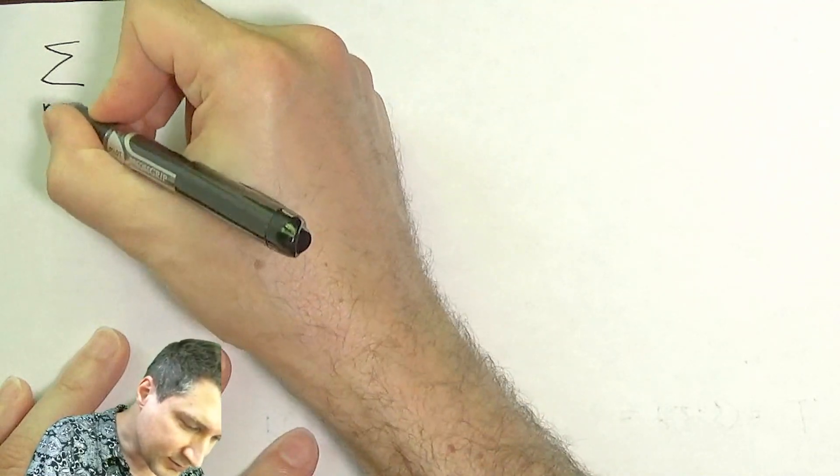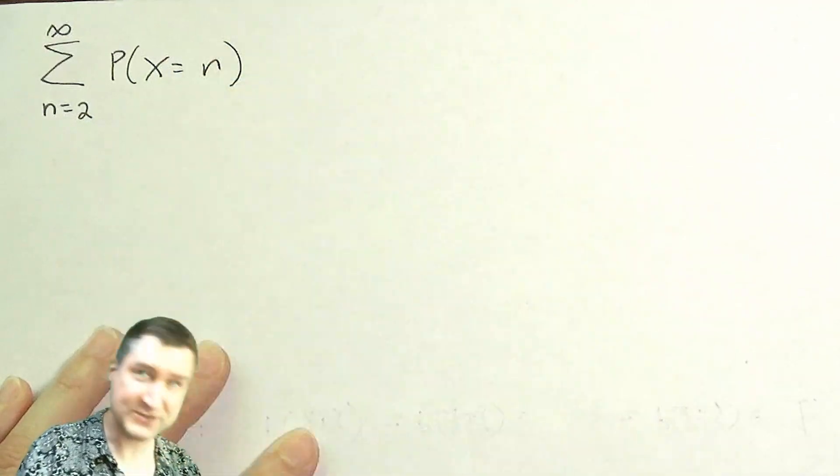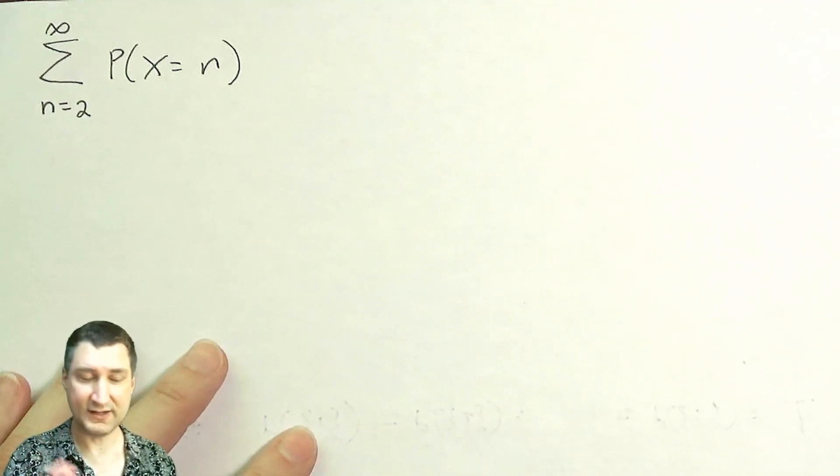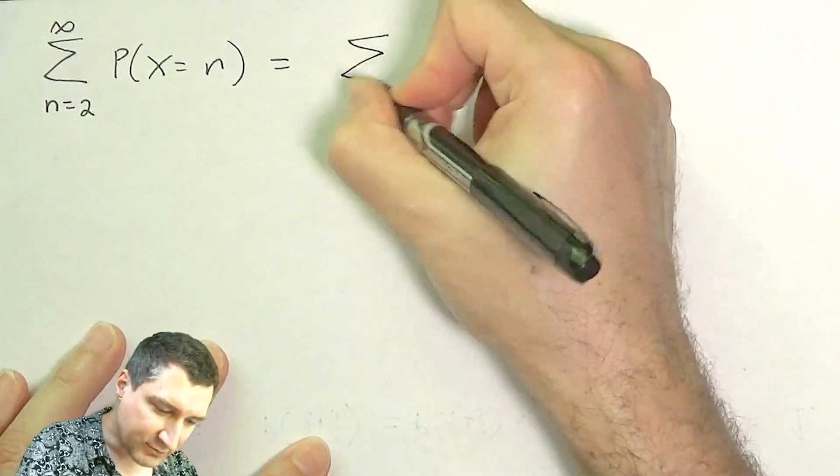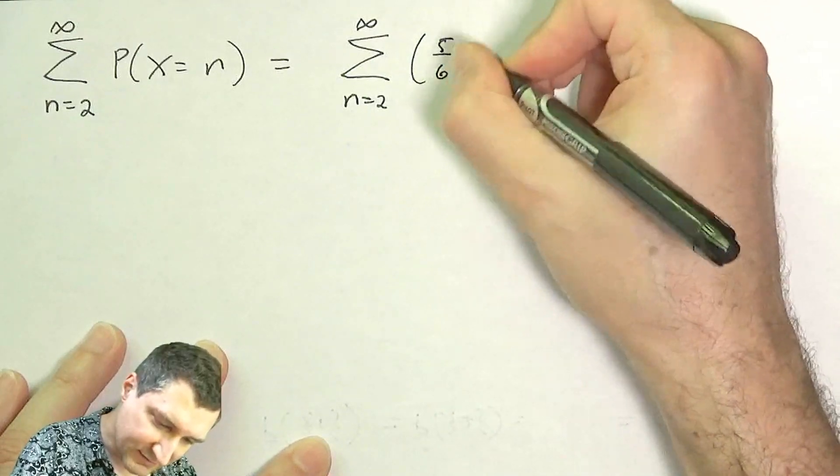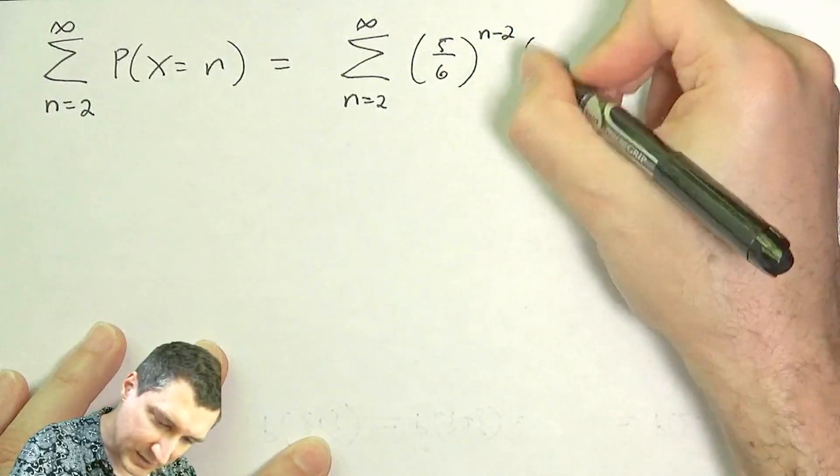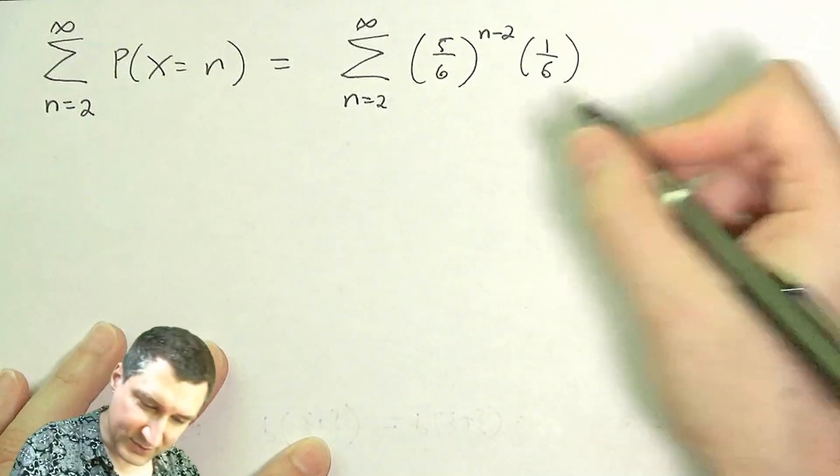Again, these are all disjoint events. So I could be looking at the probability that I got 2, 3, 4, 5, all the way up to infinity. These numbers should add up to 1, and now I know a general formula for the probability: it's (5/6)^(n-2) times 1/6. I can take the 1/6 out.